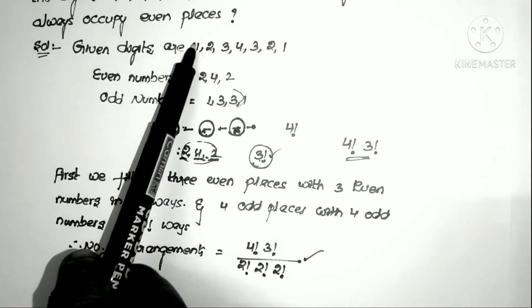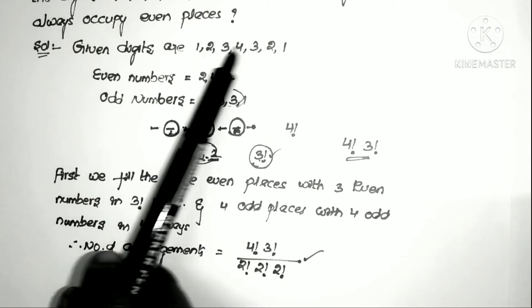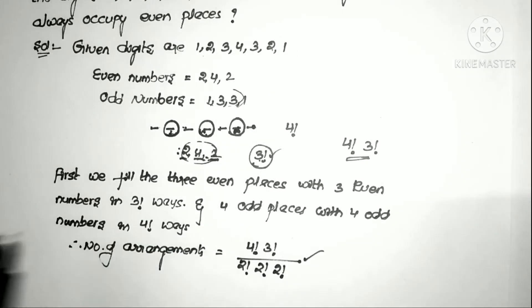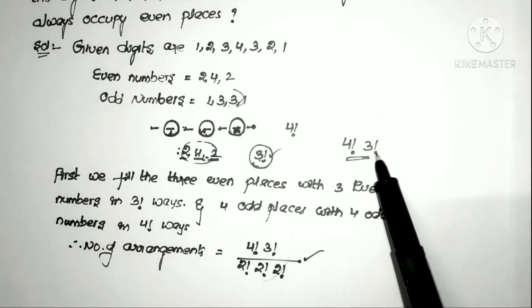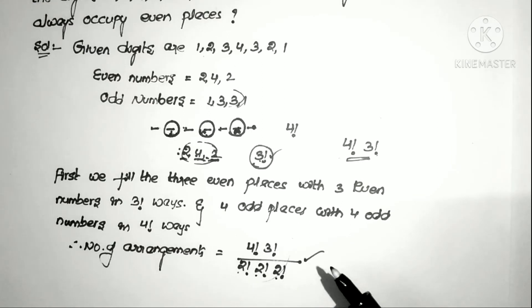Since the number 1 is repeated twice, 2 is repeated twice, and 3 is repeated twice, the final answer is 4! × 3! divided by 2! × 2! × 2!. That's the answer to the first problem.